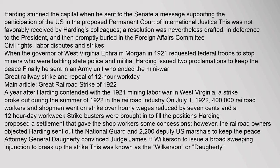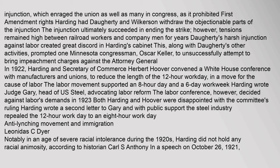On July 1, 1922, 400,000 railroad workers and shopmen went on strike over hourly wages reduced by 7 cents. Attorney General Doherty obtained an injunction, which enraged the union as well as many in Congress, as it prohibited First Amendment rights. Harding had Doherty and Wilkerson withdraw the objectionable parts of the injunction. The injunction ultimately succeeded in ending the strike; however, tensions remained high between railroad workers and company men for years. Doherty's harsh injunction against labor created great discord in Harding's cabinet.